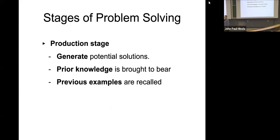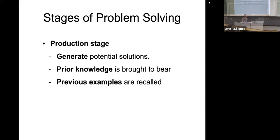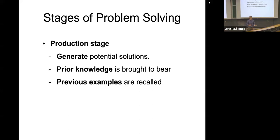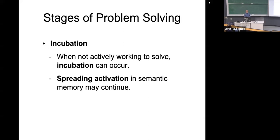The production stage is when you generate potential solutions — working out mentally which routes to take, which paths to try. You bring prior knowledge to bear. If you've solved a similar problem before and it worked, you can draw on that. However, if your prior experience involved a suboptimal solution, you might get stuck repeating an ineffective approach.